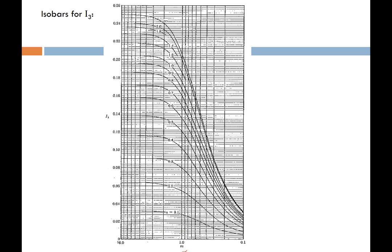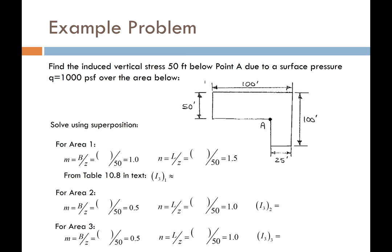With those isobars in hand, you can use the equations or graphically get your solutions for stresses beneath the corner of your rectangle. For example, what if we have a footing shaped like an elbow? This is a realistic footing that might be beneath the corner of a structure. We want to compute the induced stresses beneath the inner corner, labeled point A, at a depth of 50 feet below point A, given a uniform stress of 1,000 pounds per square foot.